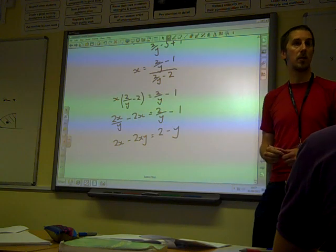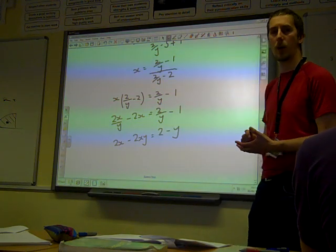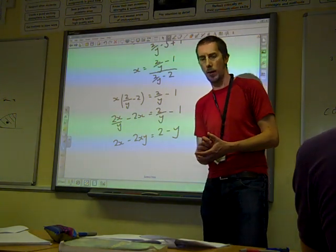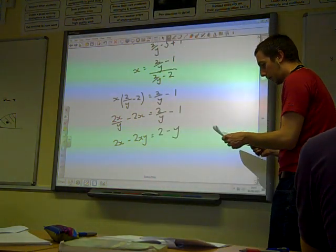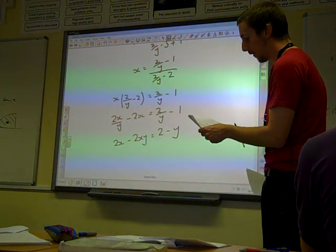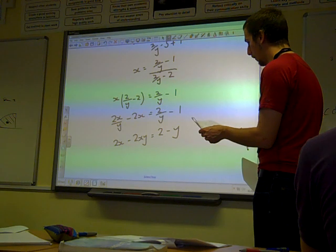And then we could leave it. We've got our Cartesian equation in a form that doesn't involve fractions. So Mark's screen for this has 2x plus y equals 2xy plus 2. That's pretty much the same as what we've got, isn't it?